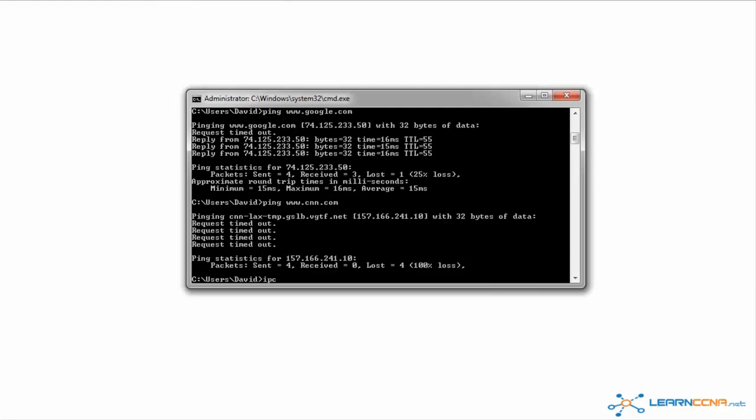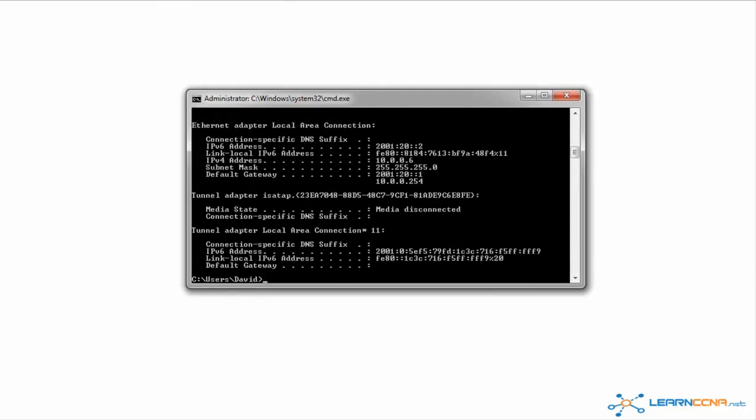The command ipconfig will show me the IP address on my local machine when using Windows. So in this example, my IPv4 address is 10.0.0.6. You'll also notice here that I have an IPv6 address of 2001:20::2.